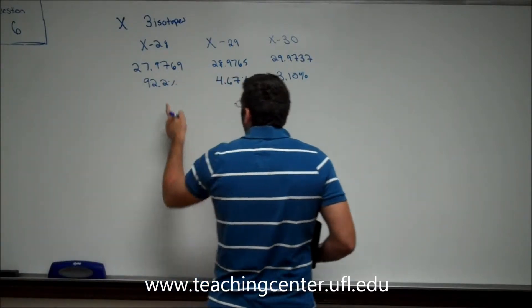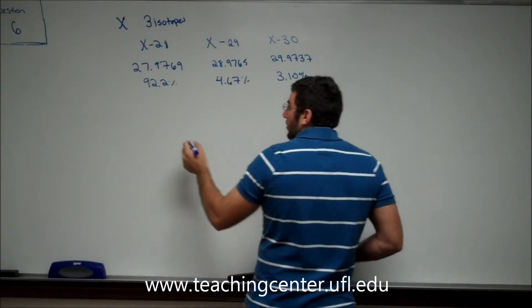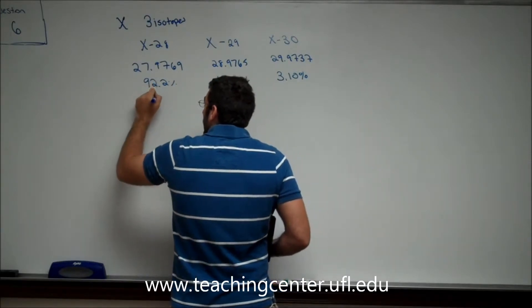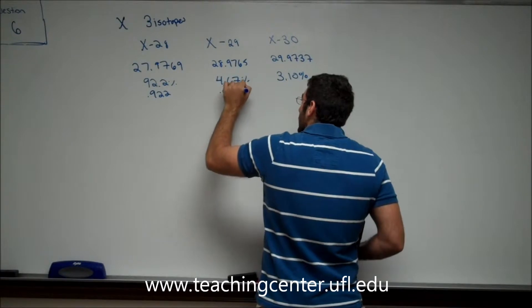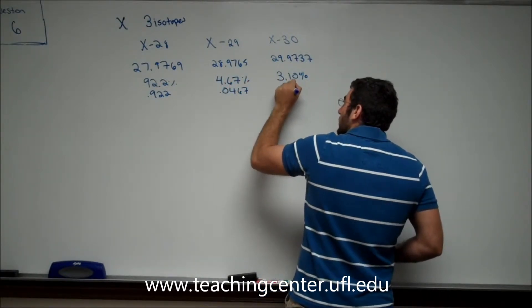So what you do is divide each of the percentages by 100. So this one is 0.922, 0.0467, and 0.0310.